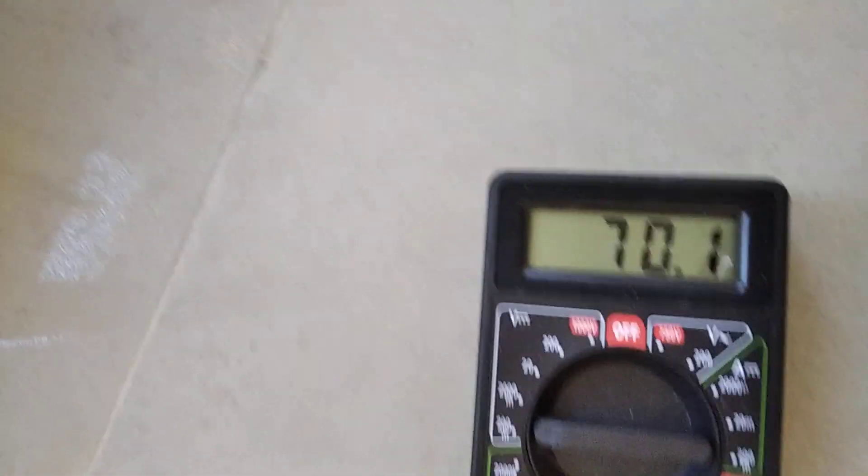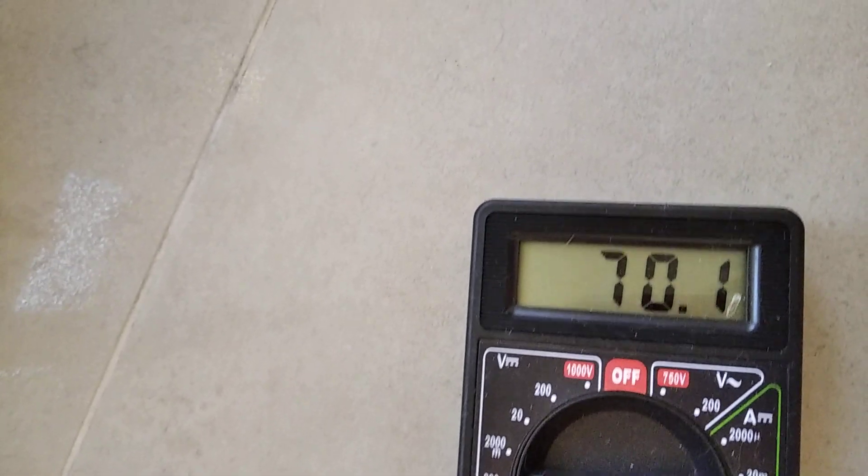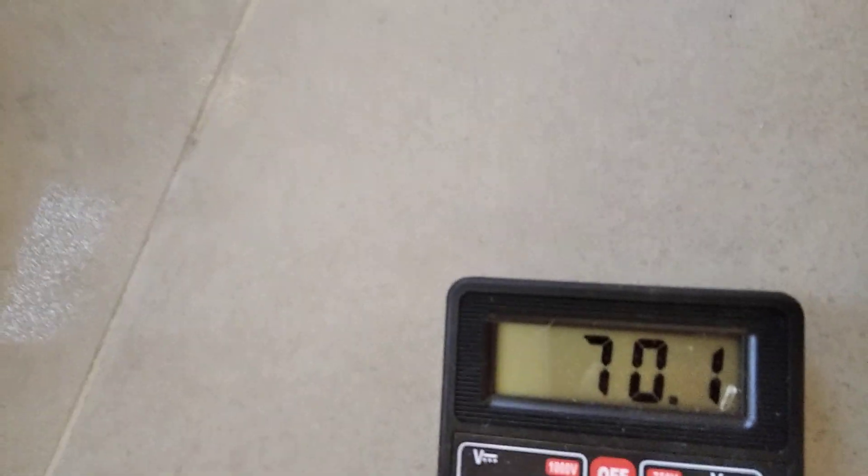So then given this value of 70 millivolts, I can then plug in and divide that by 2.521 times 10 to the minus 3 ohms. And if I do that I find that the current running through this cell is 27.8 amps. I'll say 28 amps.